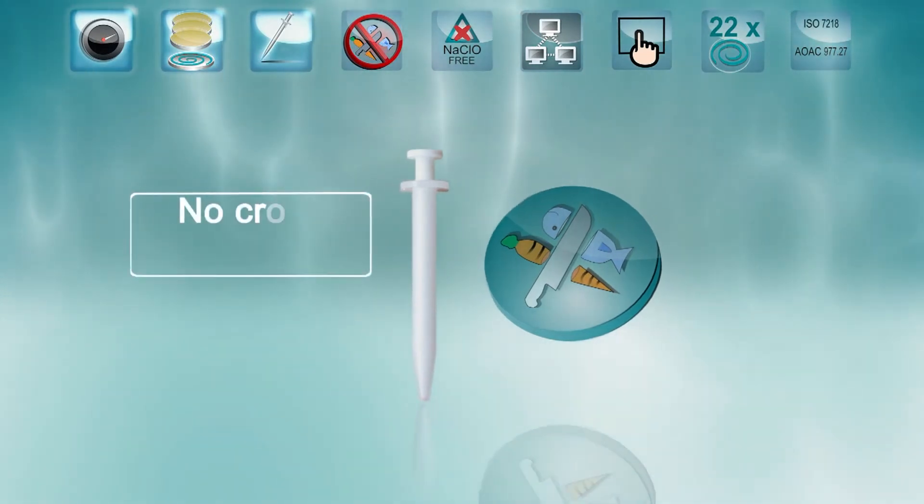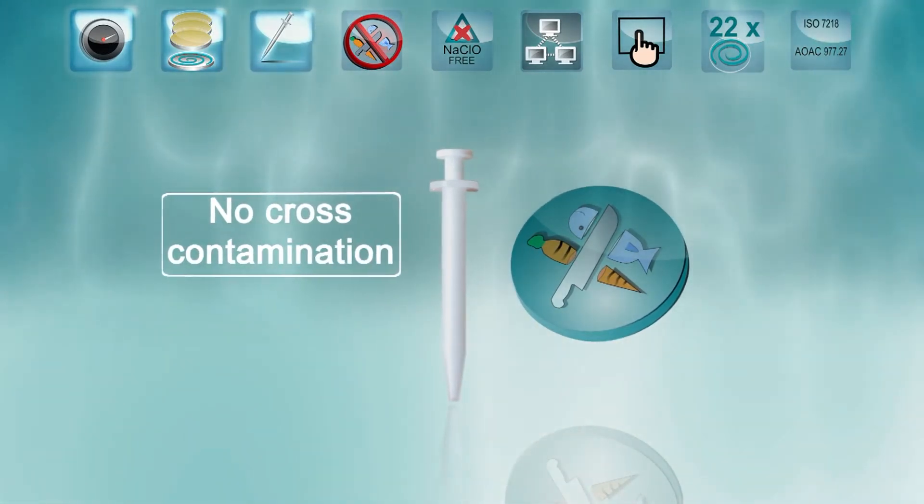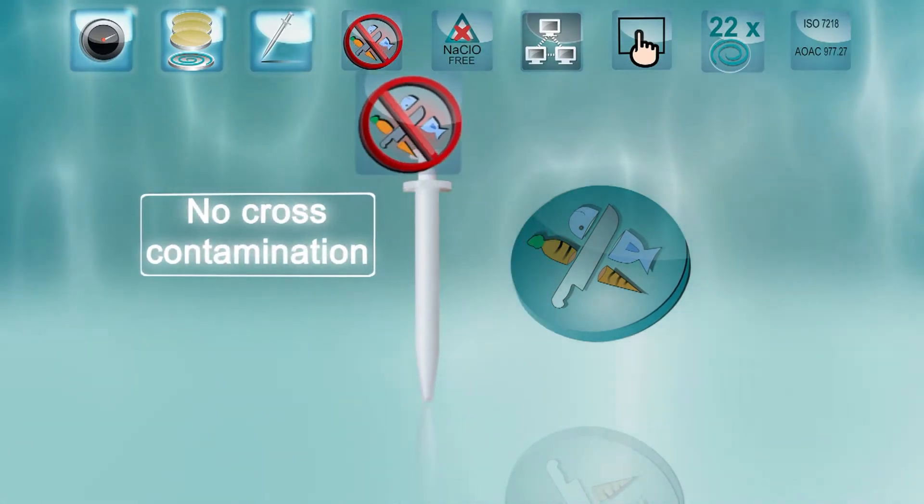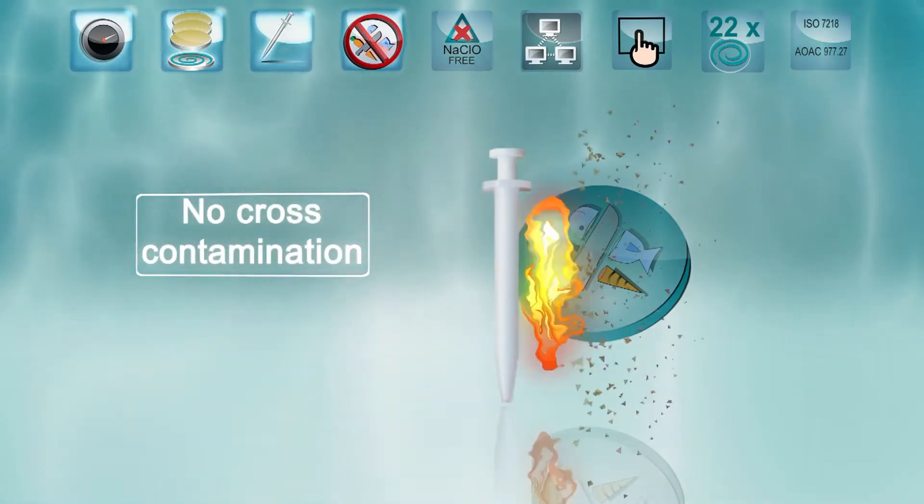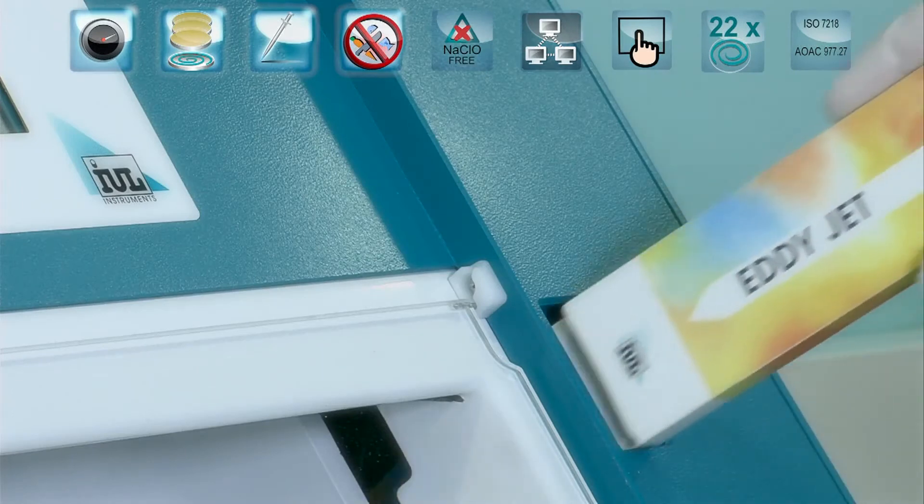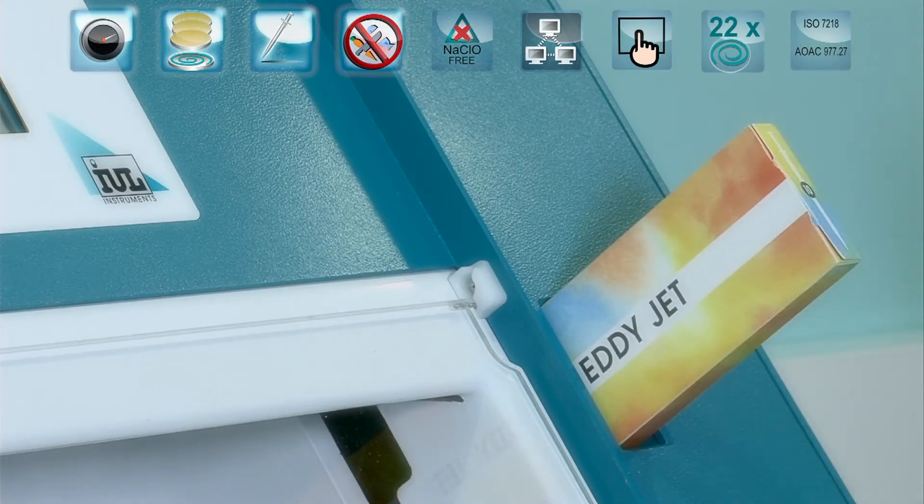IUL's world-patented micro syringes prevent any cross-contamination from taking place. This makes EDIJED2 the spiral spreader with the highest sensitivity. Gamma ray micro syringe sterilization makes cleaning cycles unnecessary, saving large amounts of time.